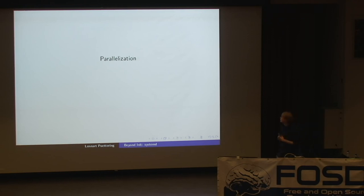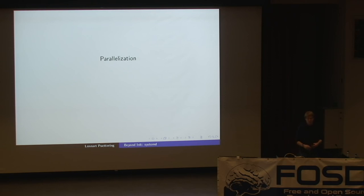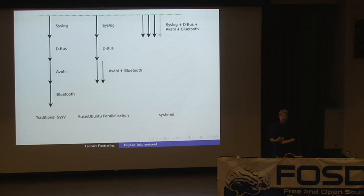The next topic we'll touch is parallelization — one of the key things that systemd is about. Probably everybody has a rough idea what that means: if you boot up your machine and start a couple of services — depending on what you're running, maybe up to 50 services or so — we start them as much as possible in parallel, so that whenever the CPU has nothing to do, it can do something else. We have this wonderful graphic here which tries to explain the way systemd implements parallelization, and how traditionally parallelization was implemented — or not implemented at all.